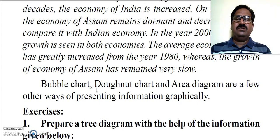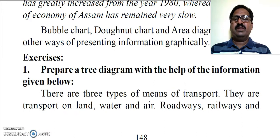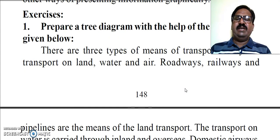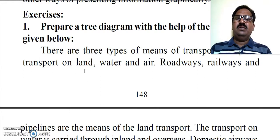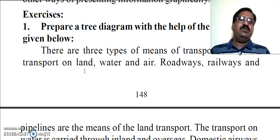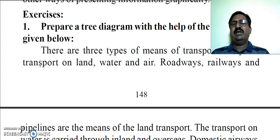These include the bubble chart, the donut chart, and the area diagram. So in this way, a line graph allows us to show and present information clearly, and you can also interpret the information given in a line graph.